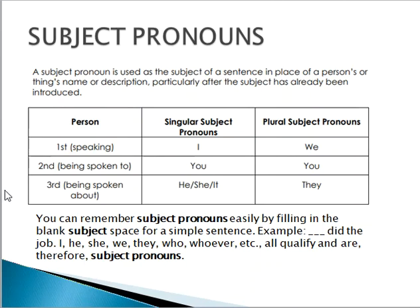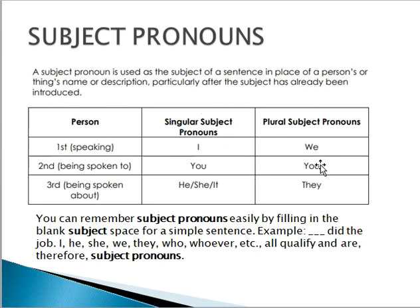We can split subject pronouns into two categories: singular subject pronouns and plural subject pronouns. Singular means one entity — one person, one thing, one animal, one place — contrary to the plural subject, which means many or more than two, as in we, you, and they.